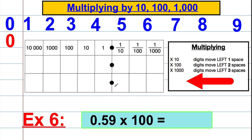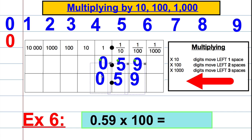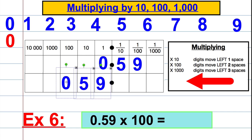0.59 multiplied by 100. Here we have no ones, 5 tenths and 9 hundredths — that's our original number. We're multiplying by 100, so we're shifting two spaces to the left: 1 and 2. This tells us we've got no hundreds, 5 tenths becomes ones, and we get 59. We can drop the leading zero, so the answer is just 59.